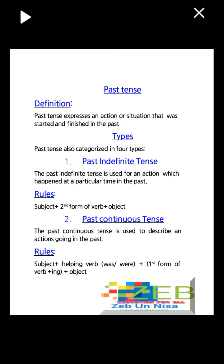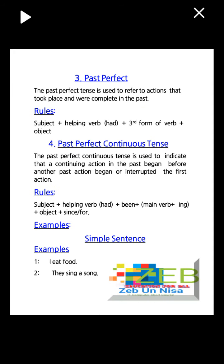Number three: past perfect tense — used to refer to an action that took place and was completed in the past. Rules: subject plus helping verb had plus third form of verb plus object. Four: past perfect continuous tense — used to indicate a continuing action in the past that began before another past action began or interrupted it. Rules: subject plus helping verb had plus been plus main verb plus -ing plus object plus since/for.